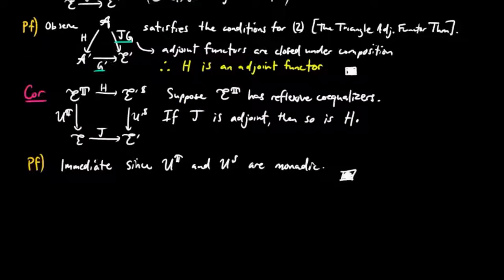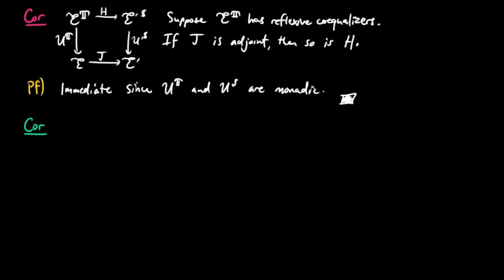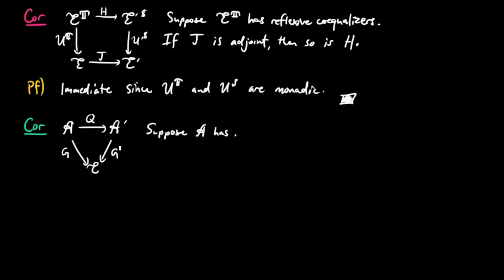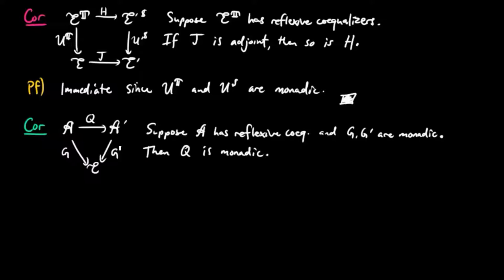As another corollary, let the following be a commutative triangle of functors. Suppose the category A has reflexive co-equalizers, and G and G prime are monadic functors. Then Q is also a monadic functor.